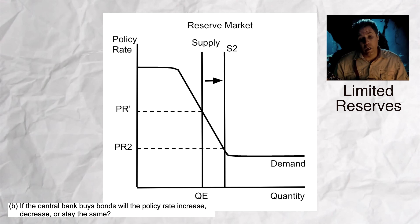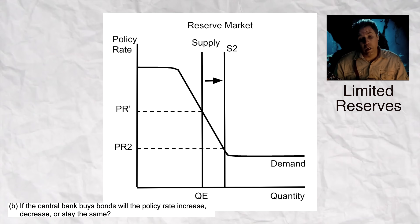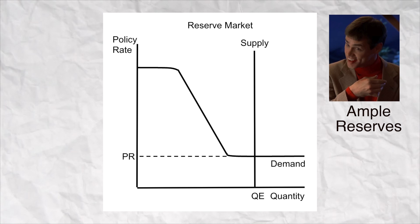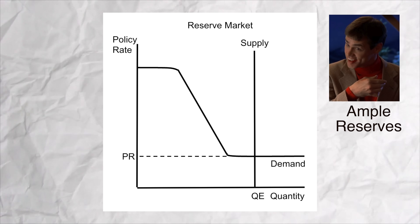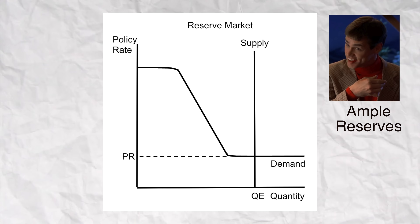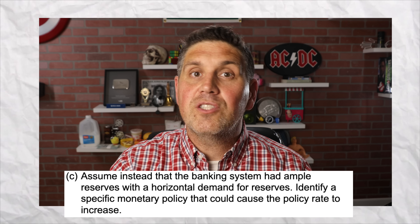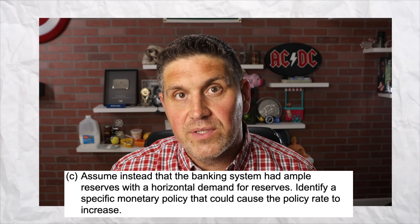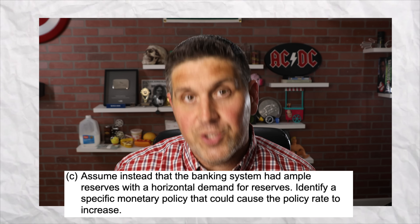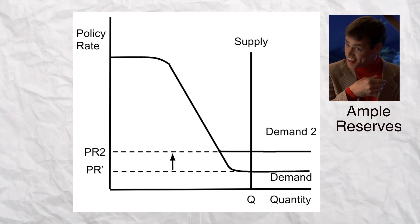For part A-ii, you draw a vertical supply of reserves in the downward portion of the demand curve, because that's the range that has limited reserves. For part B, an increase in money supply would increase reserves and decrease the policy rate. And you can see that eventually an increase or decrease in reserves has no effect on the policy rate. So if the banking system has ample reserves, what can the central bank do to increase interest rates? They can increase the interest on reserves — the rate the central bank pays banks for holding reserves.